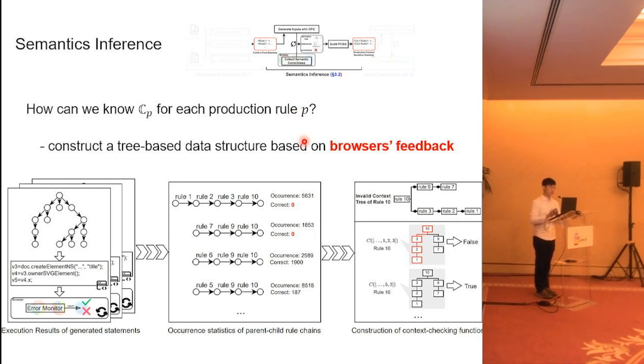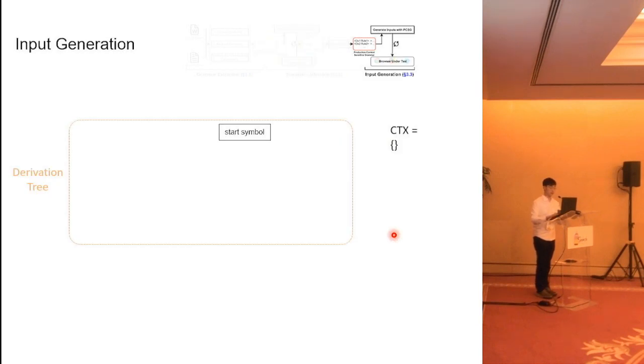So the question here is, how can we know the context-checking function for each production rule? Basically, we design a tree-based data structure to record the semantic incorrectness information. First, we randomly generate some derivation trees and transform them into test cases and collect the semantic feedback of browser executions. We can obtain many error statistics. Finally, this data structure can help us identify the invalid context of each production rule.